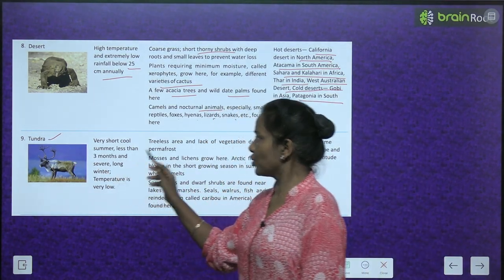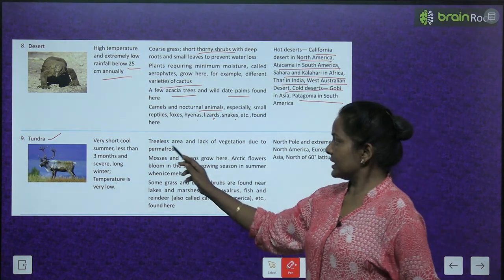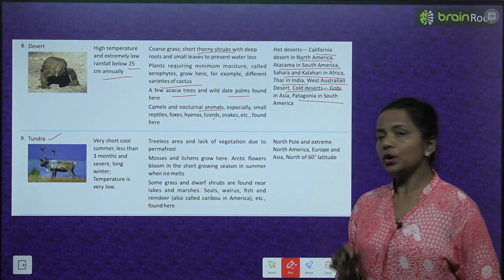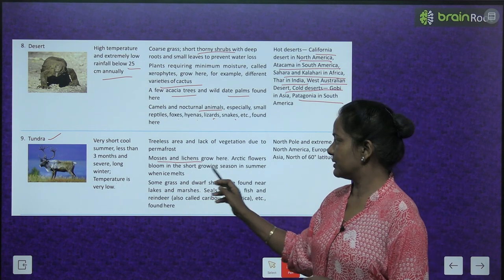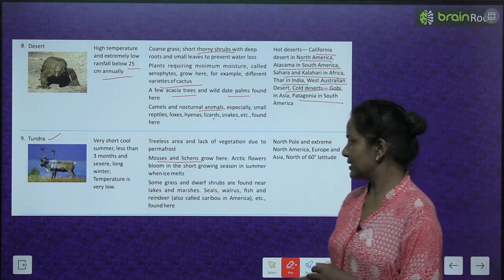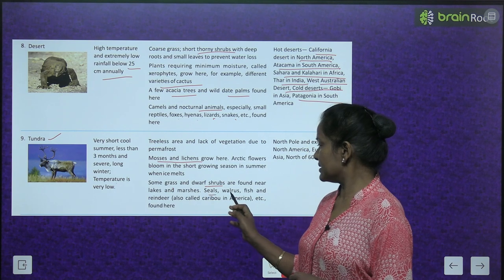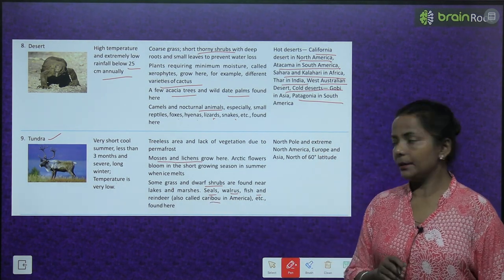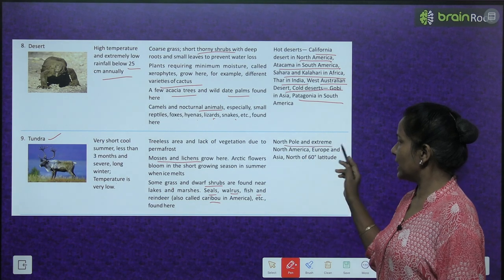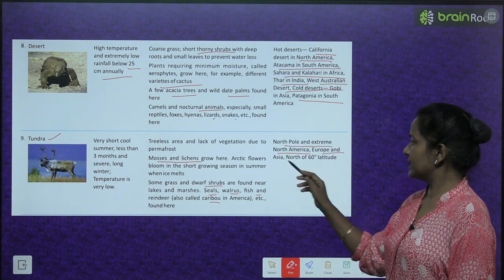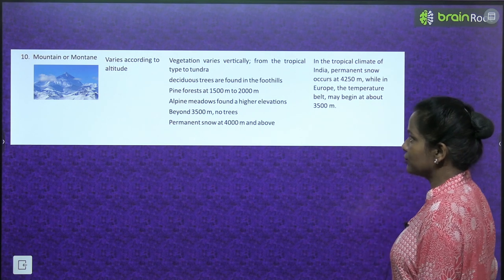Next is the tundra biome. Very short cool summer — less than 3 months — and a severe long winter. Temperature is very low. Treeless area with lack of vegetation due to permafrost. Mosses and lichens grow here. Arctic flowers bloom in the short growing season in summer when ice melts. Some grass and dwarf shrubs are found near lakes and marshes. Seals, walrus, fish, and reindeer (also called caribou in America) are found here. Regions: North Pole and extreme northern areas of North America, Europe, and Asia — north of 60° latitude.